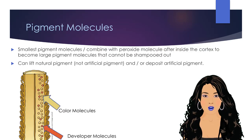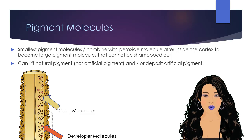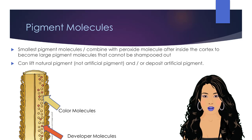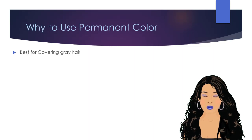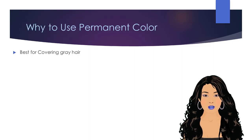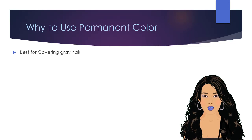These molecules can remove, or lift, natural pigments only — not artificial pigment — and deposit artificial pigment, all during the same process. Permanent colors are used in many applications, but are the best for covering gray hair.